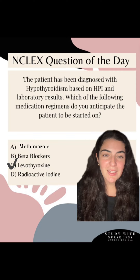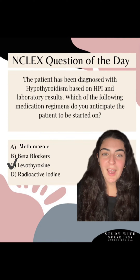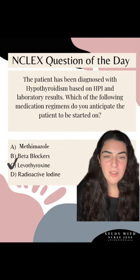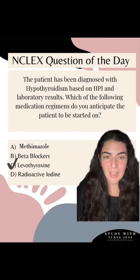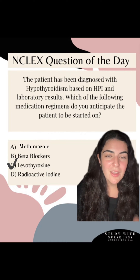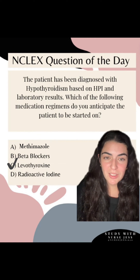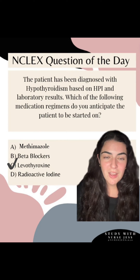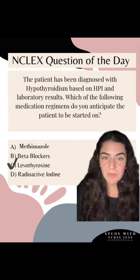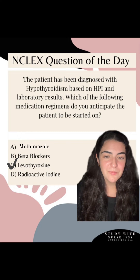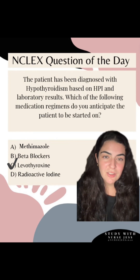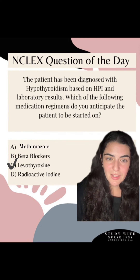Now options A, B, and D are all treatments for hyperthyroidism. Methimazole works to block T3 production, which diminishes the overactiveness of the thyroid. Beta blockers are used for symptomatic relief for the anxiety and tachycardia experienced with hyperthyroidism. And radioactive iodine is a treatment used to shrink the thyroid.